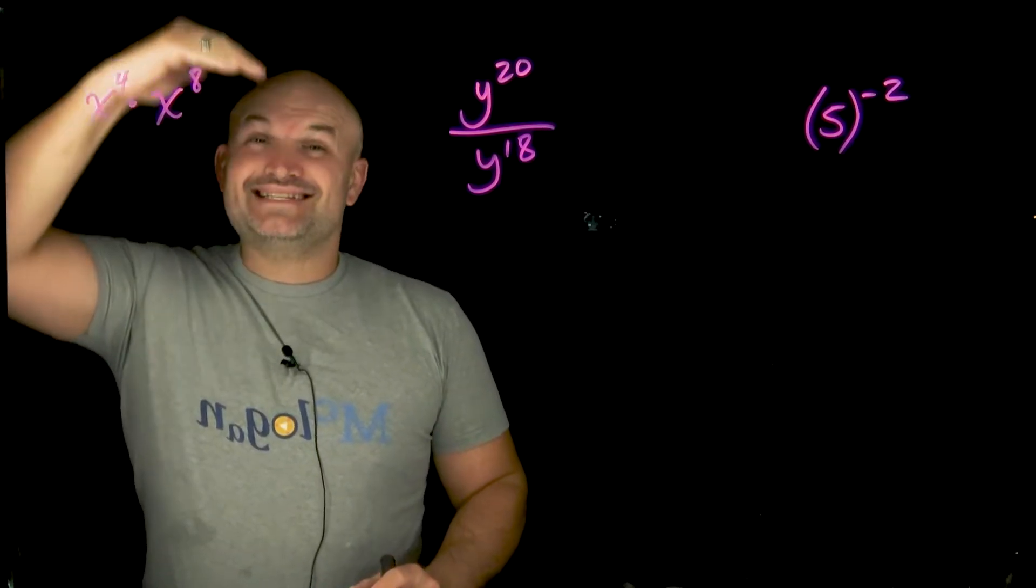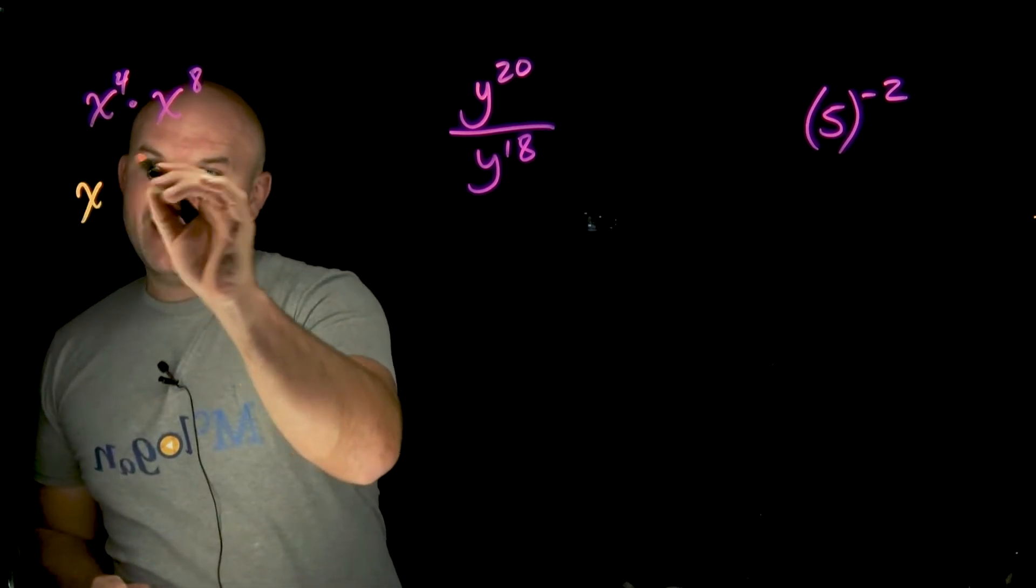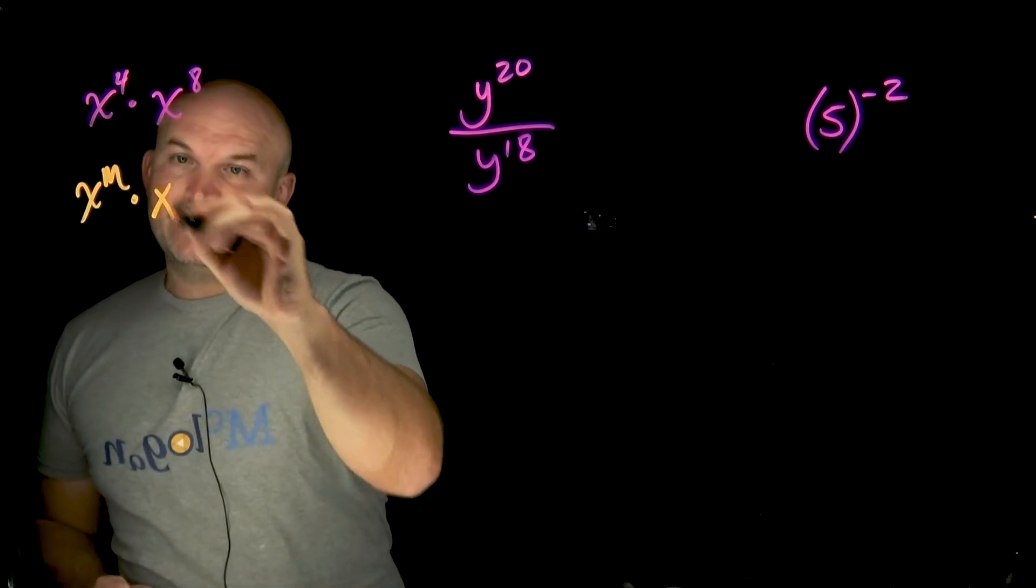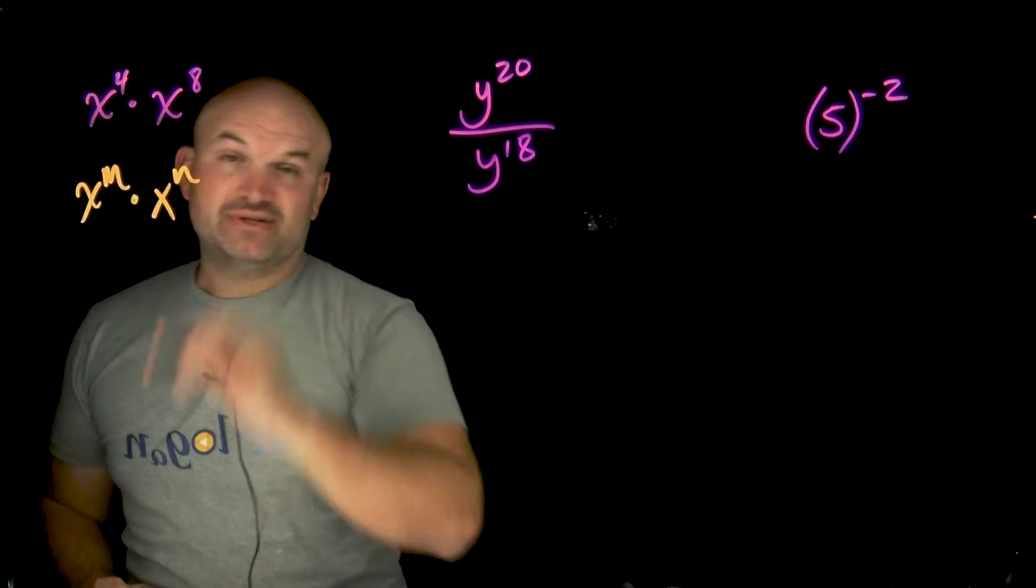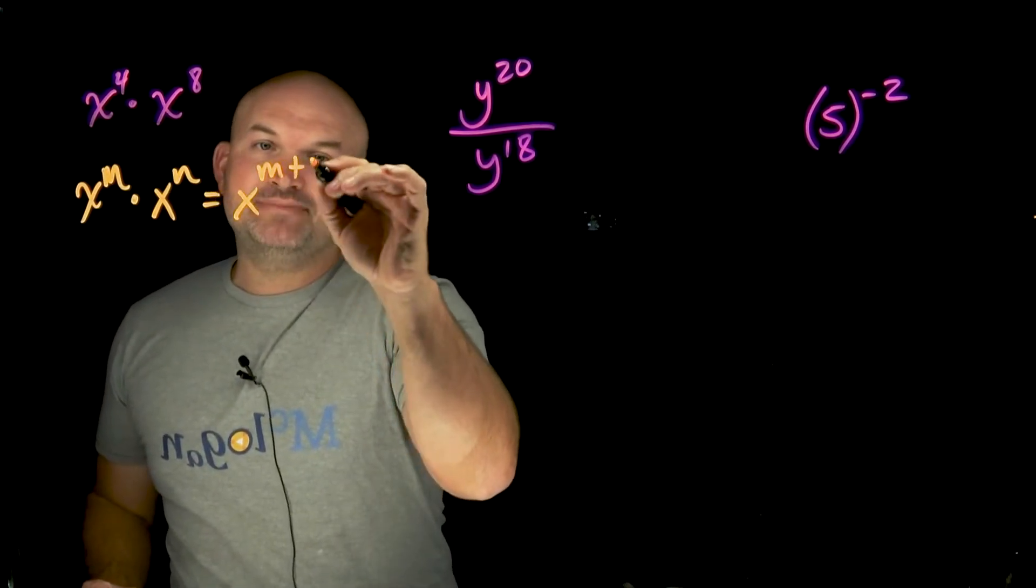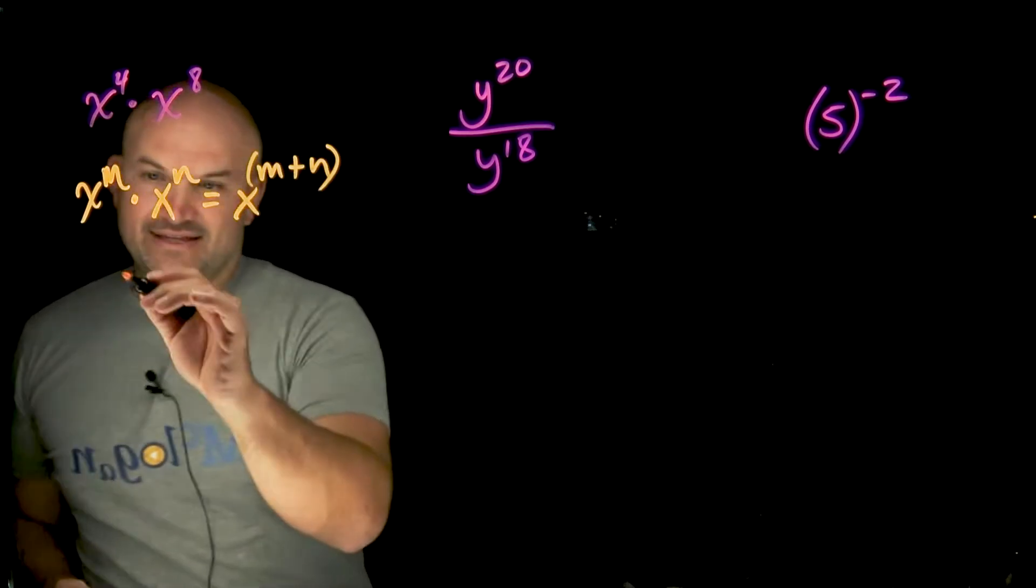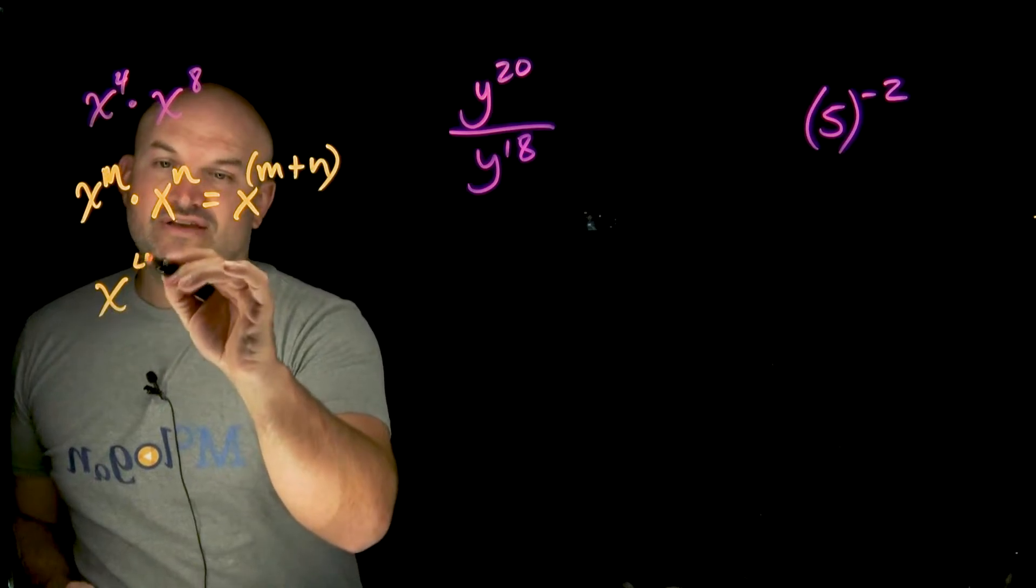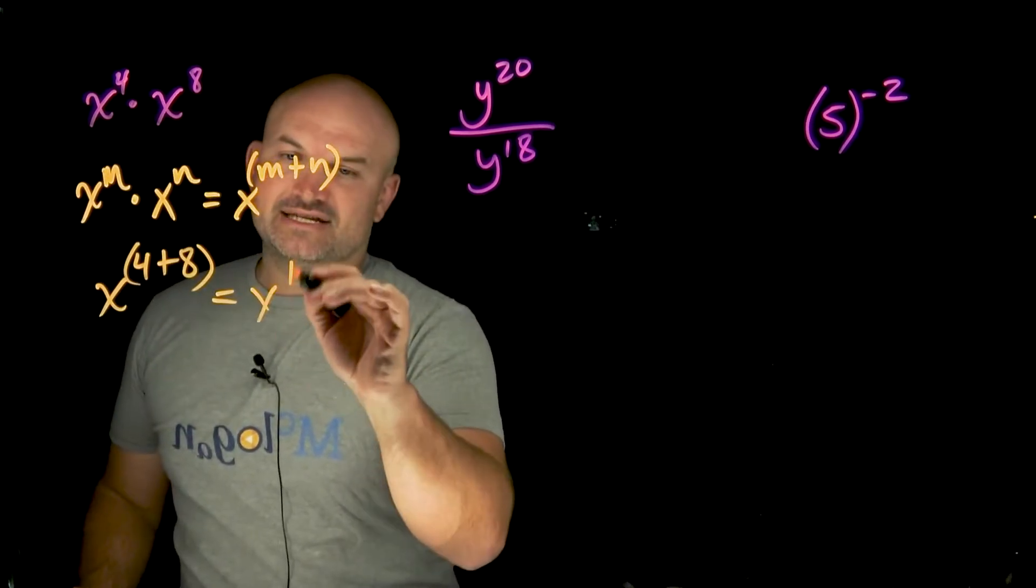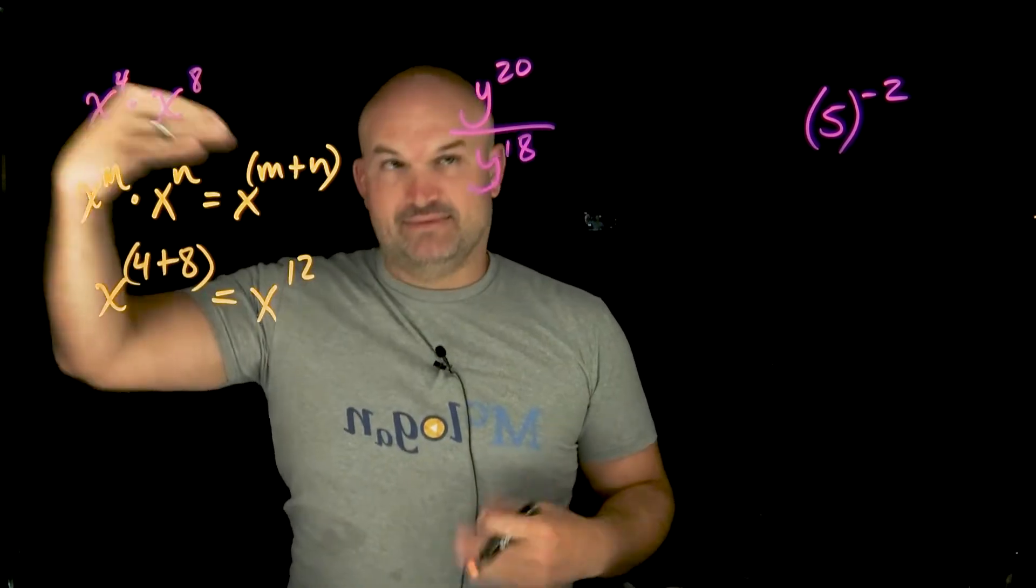In this first problem, I have x to the fourth times x to the eighth. The rules of exponents state when you have the same base raised to a power times another exponent with the same base but a different power, you add the powers but keep the base the same. So x to the fourth times x to the eighth equals x to the four plus eight, which gives us x to the twelfth. Just remember, when you multiply exponents with the same base, you add the powers.